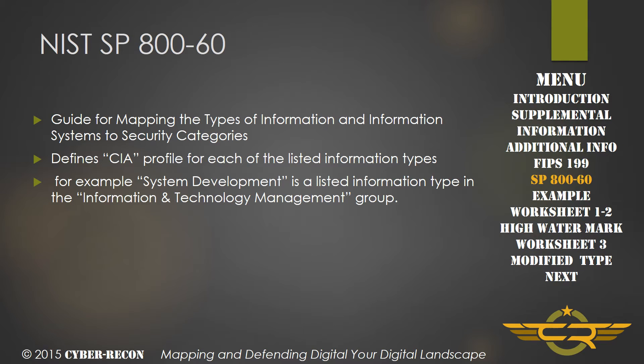NIST Special Publication 800-60 is the guide for mapping the types of information and information systems to security categories. It defines a CIA profile for each of the listed information types — in other words, for confidentiality, integrity, and availability, it will assign either high, moderate, or low as a baseline for each of those. For this, we'll use an example of system development as it's listed in the Information and Technology Management group.